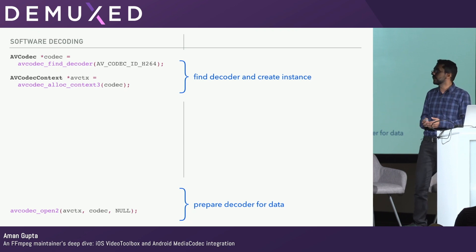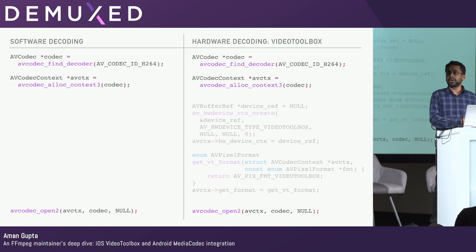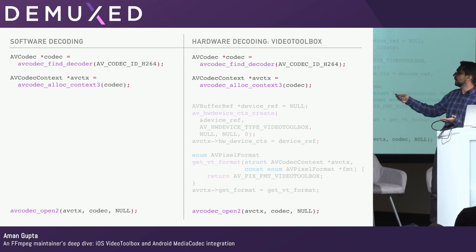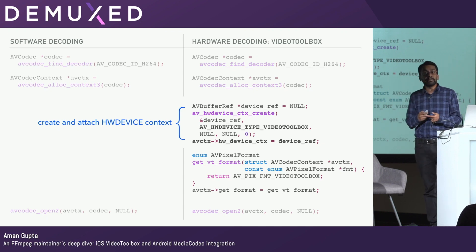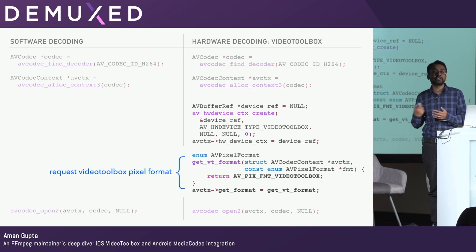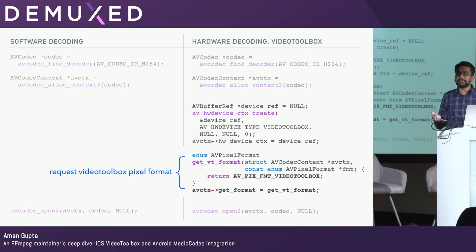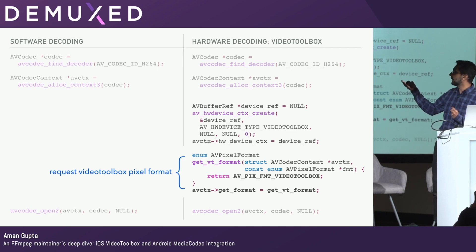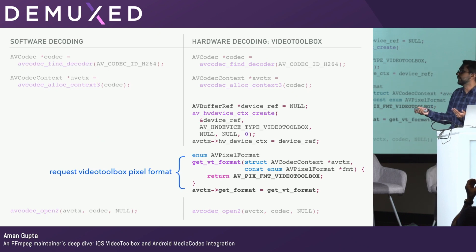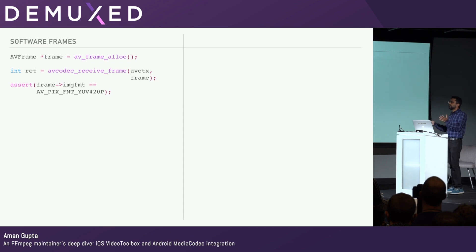If you're doing the same thing with VideoToolbox — say you have some code already for FFmpeg, you want to run on an iOS device, and now you want to take advantage of hardware decoding — the structure looks very similar but there's a little bit of new code. The first thing you do is, on that same H.264 codec instance, you attach a hardware device context of the type VideoToolbox. Then you request a pixel format. Pixel formats specify for an AV frame what the memory layout of that data is — how the frame is stored. In this case, we're saying I want you to give me back frames that are in the pixel format of VideoToolbox.